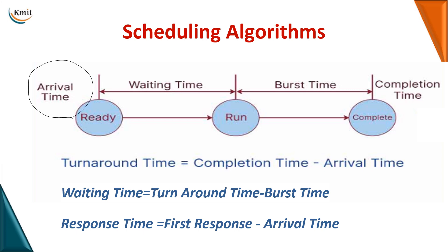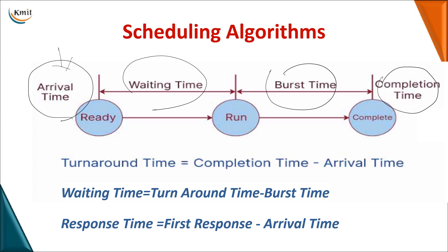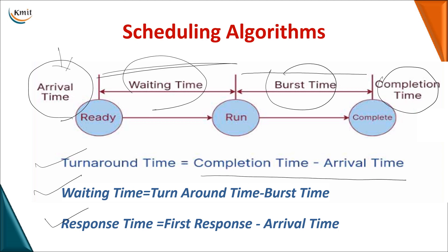For all the algorithms, these are the basic computations we need to be clear on: arrival time is the time at which the process enters the ready queue; waiting time is the duration the process is present in the ready queue; burst time is the amount of time the process is with the CPU; and completion time is the time at which the process has completed its execution. From these, we calculate turnaround time (completion time minus arrival time), waiting time (turnaround time minus burst time), and response time (first response minus arrival time), along with average values for each.